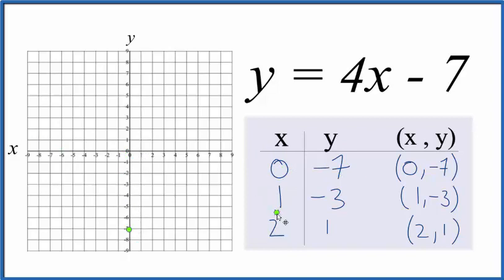We have 1 for x, negative 3 for y. So 1, down again, negative 3. We could just use two points, but if we use more than two, if we use these 3, that helps you catch any errors.